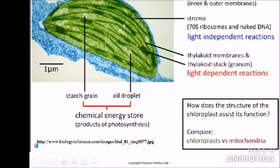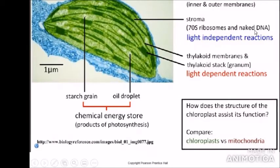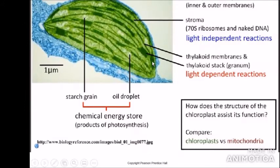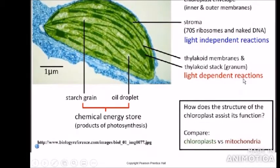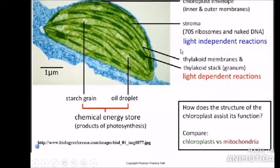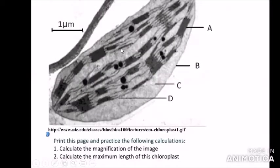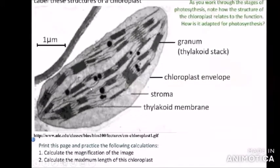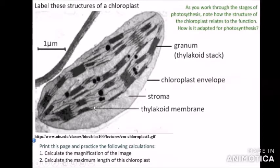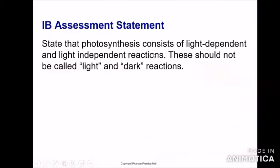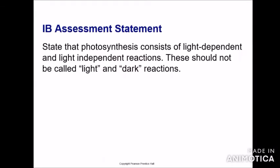Another picture shows the structure of the chloroplast. As mentioned, 70S ribosomes and naked DNA are inside the stroma. The thylakoid membrane is the place where the light-dependent reaction takes place. We can easily label such micrographs because we can see the granum, outer membrane, the stroma, and thylakoid membrane of the chloroplast.